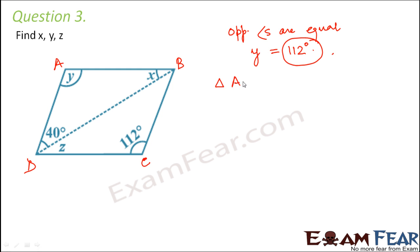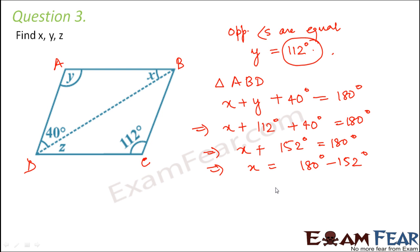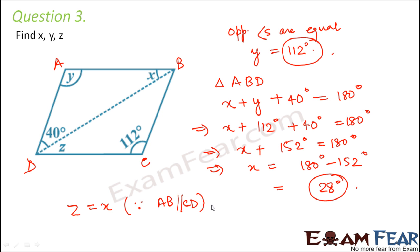Now let us look at triangle ABD. The sum of its three angles equals 180 degrees, so x plus y plus 40 degrees equals 180 degrees. Substituting y as 112: x plus 112 plus 40 equals 180, so x plus 152 equals 180, therefore x equals 28 degrees. For z: since AB is parallel to CD, alternate angles are equal, so z also equals 28 degrees.